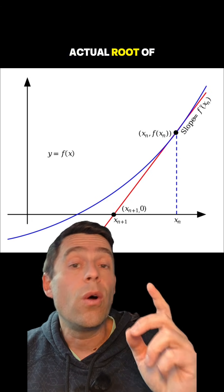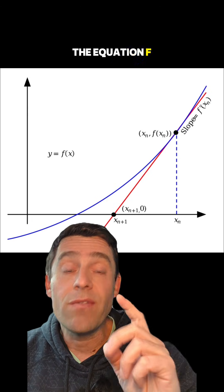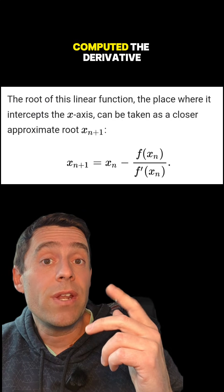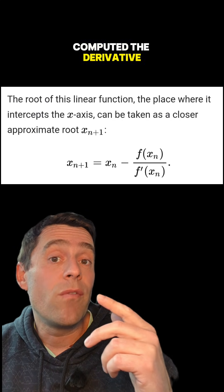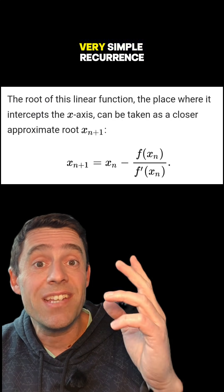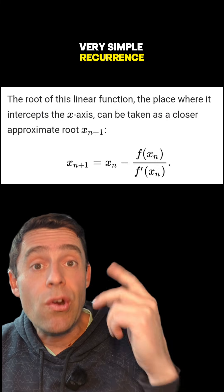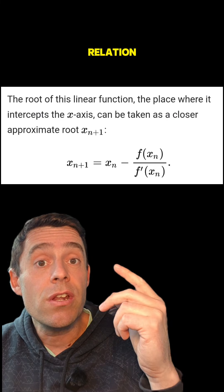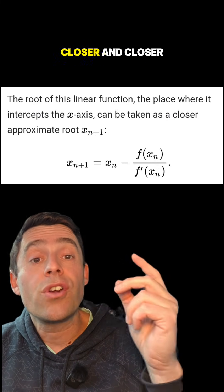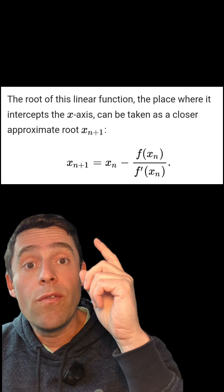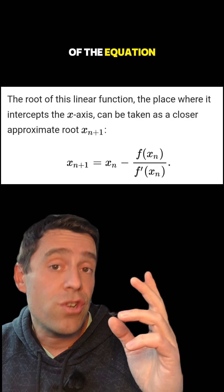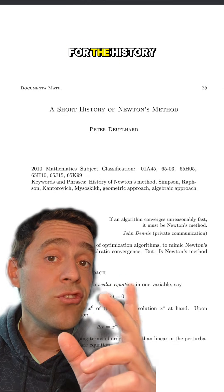By iterating this method over and over again, you get closer and closer to the actual root of the equation f(x) = 0. If you have already computed the derivative of your function f, the method has this very simple recurrence relation that you can apply over and over again to get closer and closer approximations of the root.